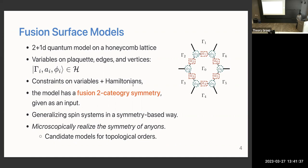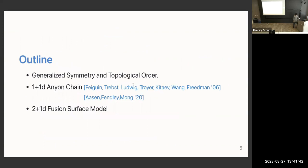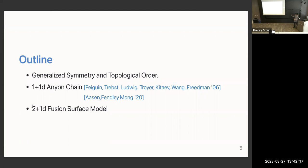The outline of the talk: first I'll review the recent development of generalized symmetry, then talk about the relationship to topological order. I'll review the 1+1 dimensional version of our story, which we are building on, and then go on to our own model.